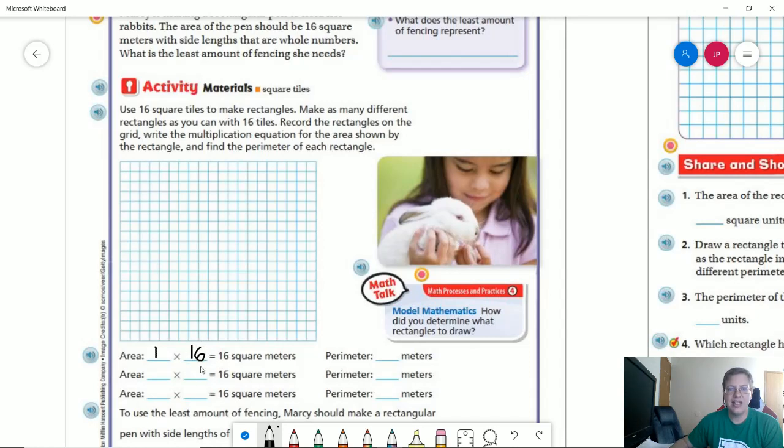If I cut this in half I would get eight, and I can do two times eight. And then my third option, I need to think of what number I can multiply by itself to get to 16. That would be four times four. So these are going to be my numbers that I use to make my rectangles.